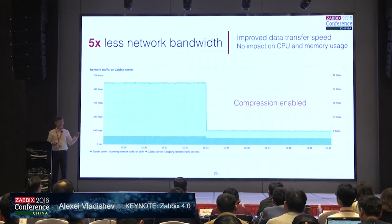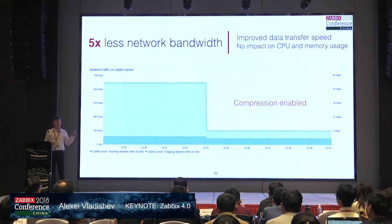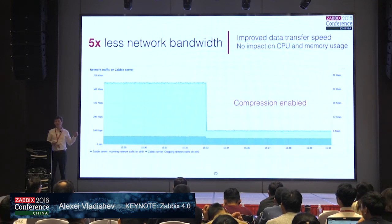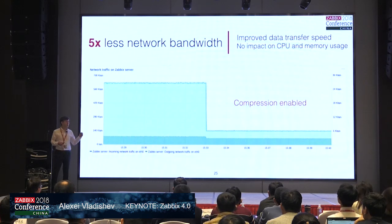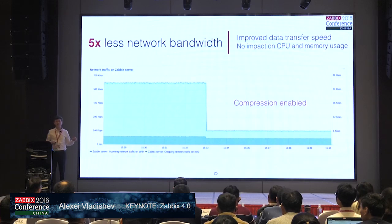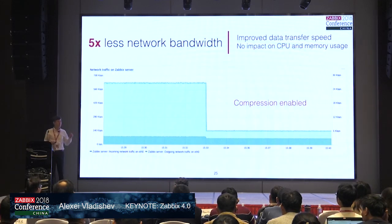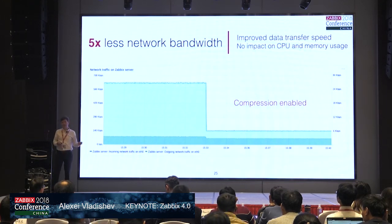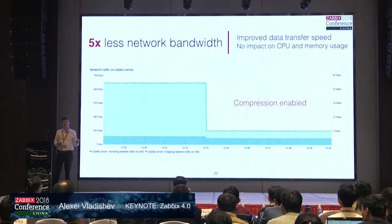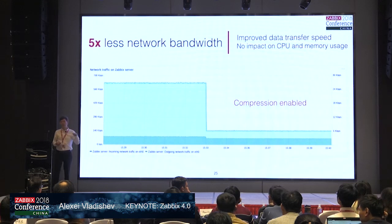We tested this in our test environments and noticed almost no additional load on the CPU and memory. Compression is essentially free. Even if you use very low-powered hardware like a Raspberry Pi, there is no visible difference with compression enabled versus no compression. CPU and memory consumption is absolutely the same.